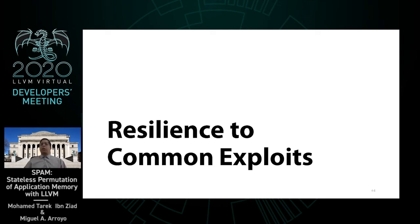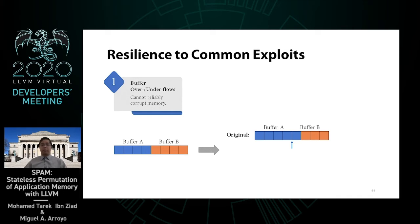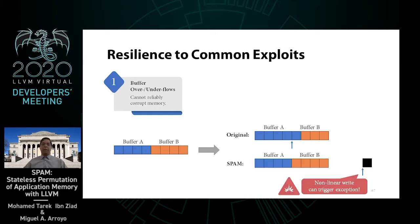To put the security benefits in more concrete terms, let's look at a handful of common exploits and how SPAM mitigates them. Here we have a classic buffer overflow with two buffers A and B side by side, and we want to override B from a pointer in A. Under normal conditions, the write happens linearly and thus reliably corrupts B. With SPAM in place, the write becomes non-linear as the write to B uses the permutation for A. This non-linear write can land anywhere, triggering an exception for example.